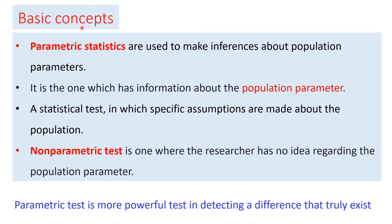Starting from the basic concepts: a parameter is a fixed measure describing the whole population — it is a characteristic which describes the whole population. For example, population mean. Statistics, on the other hand, is a characteristic of a sample. For example, a sample mean.